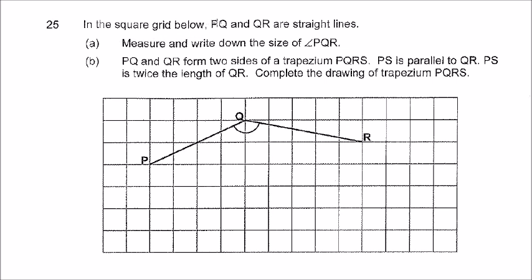In the square grid below, PQ and QR are straight lines. Measure and write down the size of angle PQR. I will show you how to measure PQR because I can't put a protractor onto the screen. I'm sure you can do it; we have learned it before.